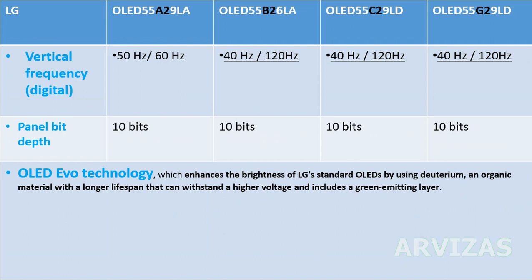Vertical frequency: the A2 model has from 50 to 60 Hz, while B2, C2, and G2 have from 40 to 120 Hz. The panel bit depth is 10 bits across all models. OLED Evo technology changes the brightness of LG standard OLEDs by using deuterium and organic matter with a longer lifespan that can withstand higher voltage and includes a green emitting layer.